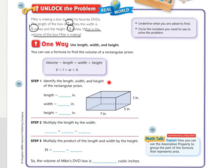So let's identify the length and width and height of the rectangle. The length of the box was 7 inches. The width of the box was 5 inches. And the height of the box is 3 inches.